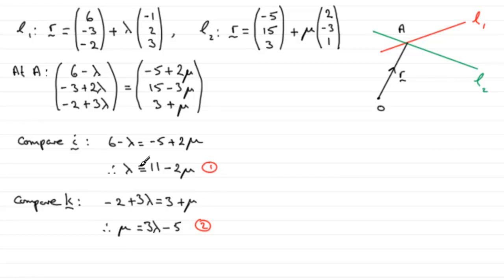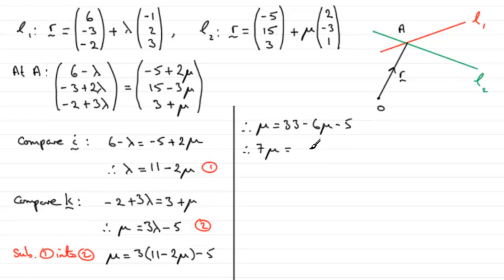And what I can do now is substitute equation 1 into equation 2. So what do we get? We'll have mu equals 3 times lambda, 3 times 11 minus 2 mu, minus that 5. If we multiply it out, we end up with mu equaling 33 minus 6 mu minus 5. So if I add 6 mu to both sides, we get 7 mu equals 33 take away 5, so that's 28. And if I divide both sides by 7, I'm going to get that therefore mu equals 4.